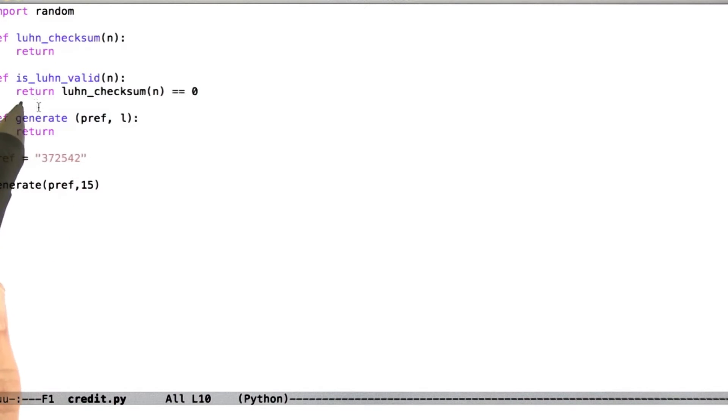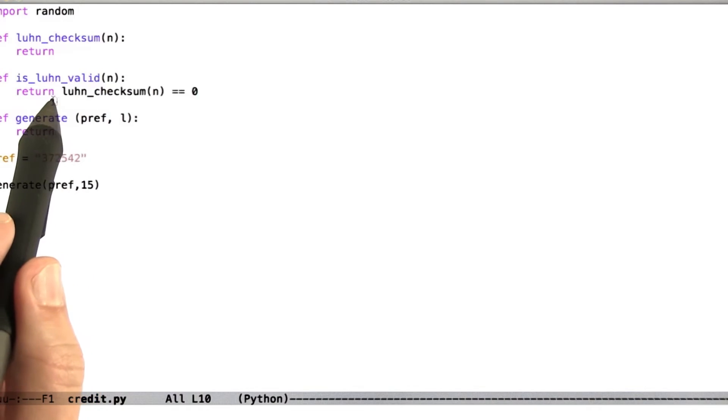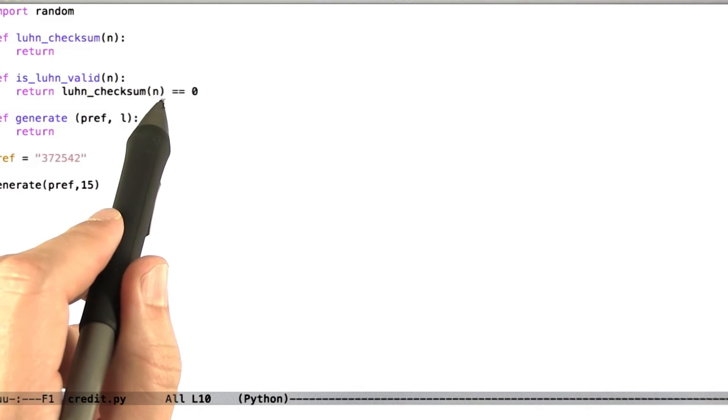To do this, you'll probably want to implement a function called Luhn checksum that computes the checksum of a number, and an auxiliary function Luhn valid that checks if the Luhn checksum for a given input is zero.